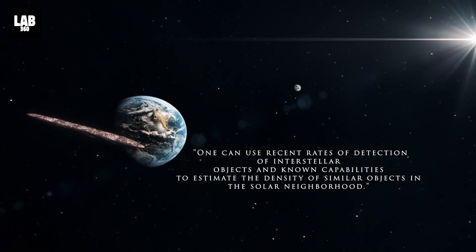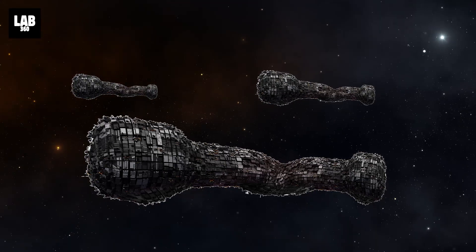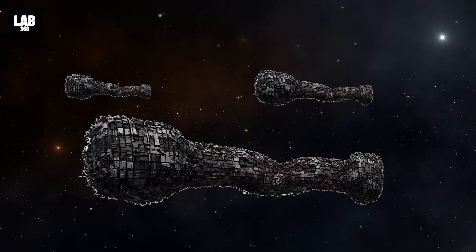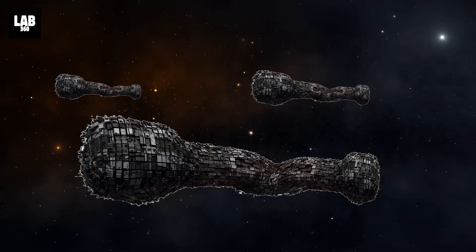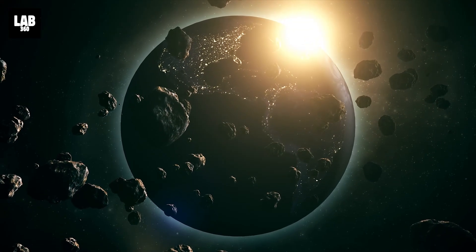Since Oumuamua, there have been three more interstellar objects detected by astronomers, making it four in eight years. At that rate, Loeb and Ezell calculated there could be up to a staggering 40 decillion interstellar objects in the entire solar system, including areas beyond the reach of our instruments.